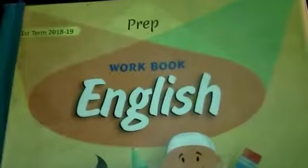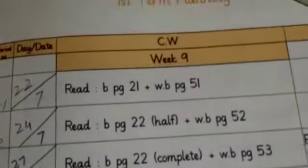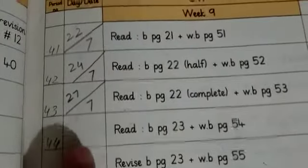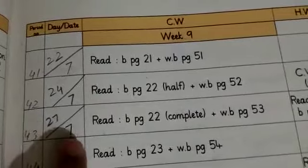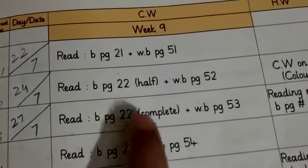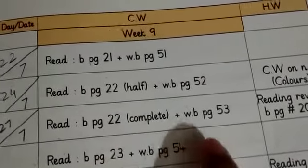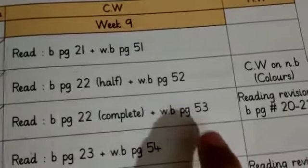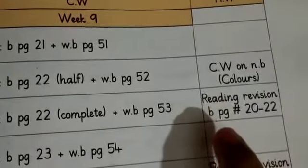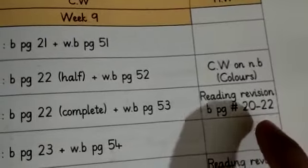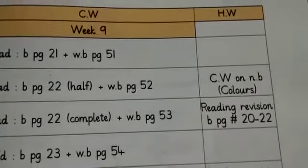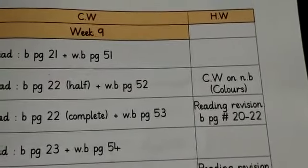First of all, we will see today's planner. Week number 9, planner number 43. First of all, you will write date and month. Reading book page 22, complete plus workbook page 53. Reading review book pages 20 to 22.